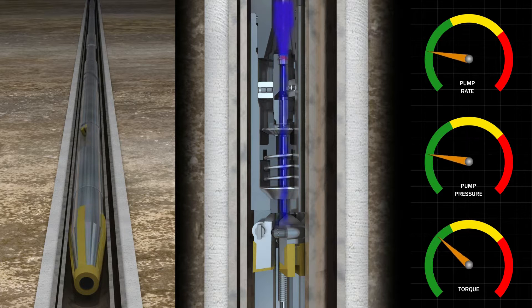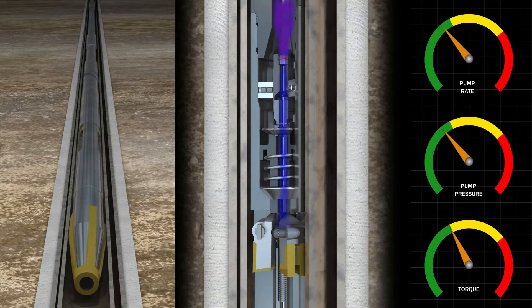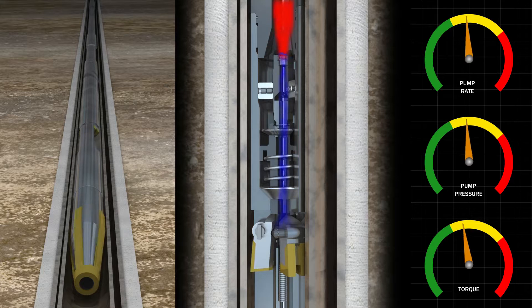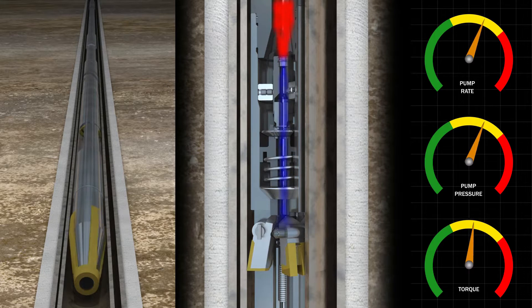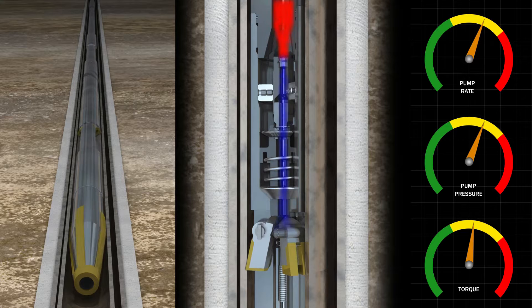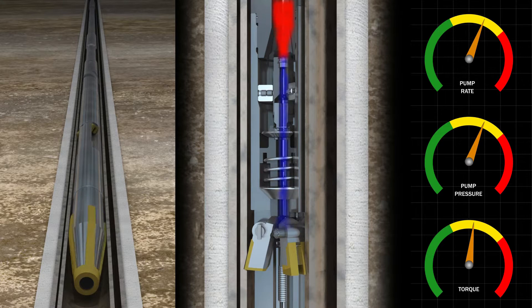Circulation is initiated. Circulation through the orifice causes a pressure drop. This pressure pushes the piston, compressing the springs, and causes the cutters to expand and cut the casing.